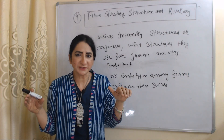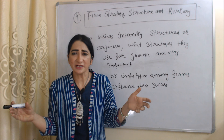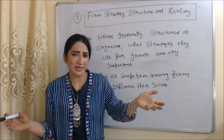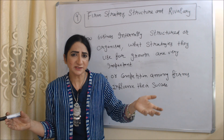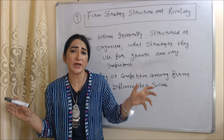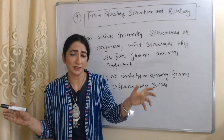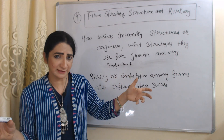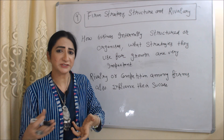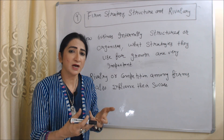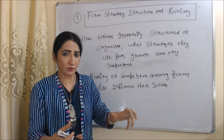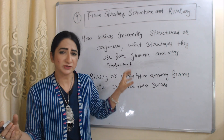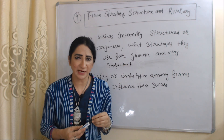Next is firm strategy, structure and rivalry. How a business is internally structured or organized and what strategies it uses for growth are very important. Similarly, rivalry or competition also influences their success. Because of competition, we try to produce high quality products at a lower cost so that we can survive in the market. So this is all about Porter's Diamond Model.